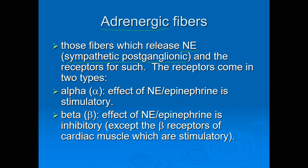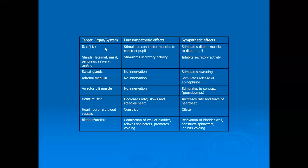The only adrenergic fibers are sympathetic postganglionic fibers. The receptors come in an alpha form or a beta form — just know that those are present. We will be talking about alpha and beta next semester when we discuss the effect of sympathetic stimulation on various organs: the heart, cardiovascular system, respiratory system, and digestive system. So adrenergic fibers release norepinephrine and are part of the sympathetic system.